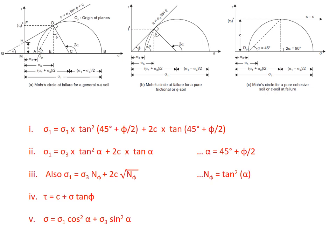Henceforth we will be dealing with few parameters which you must have studied before in previous videos. The most important ones are the principal planes and stresses sigma 1 and sigma 3, the normal stress sigma, the shear stress tau, the angle of internal friction phi, the cohesion c, and the angle of failure plane alpha.